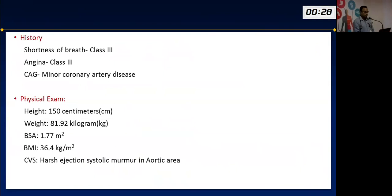Another case involved a patient with rheumatic heart disease who had a prior mitral valve replacement, now presenting with chronic kidney disease and recurrent subdural hemorrhage — making him a poor candidate for surgery. In this patient, we successfully deployed a transcatheter aortic valve in the presence of an existing mechanical valve. The final result was satisfactory.